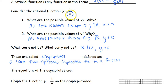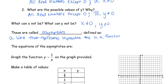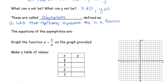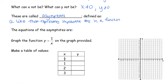Asymptotes are defined as a line that represents impossible numbers in a function. Asymptotes are lines that our graph is going to approach but never actually touch. No matter what number I plug in for x, it could approach 0, but it's never actually going to get to 0. Now we want to graph the function y equals 1 over x by making a table of values.